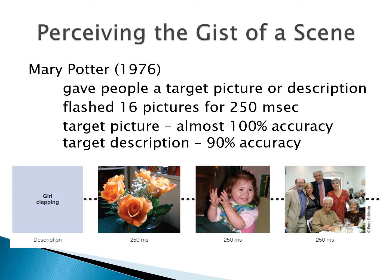Mary Potter did a study back in 1976 where she gave people a target picture or a description — for example, 'girl clapping' — and then flashed 16 pictures for 250 milliseconds. This millisecond timing is going to become really important. 250 milliseconds is a quarter of a second, so quite fast. The study also had masking as part of it, which I'll explain.